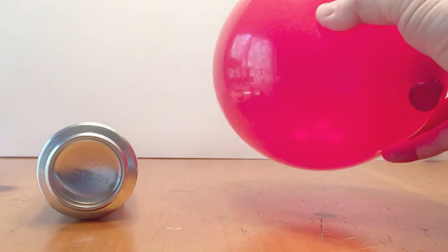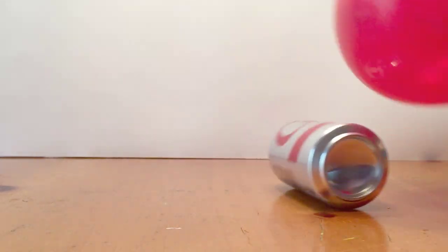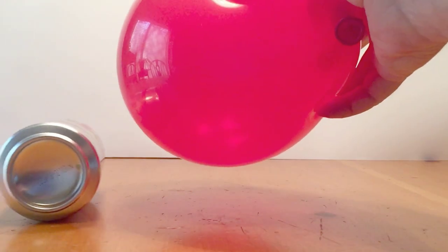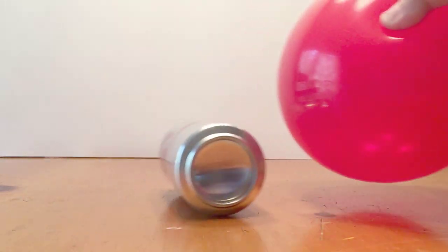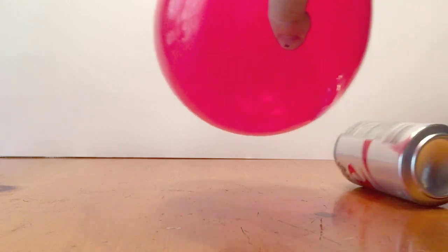Using the same charged balloon, these electrons have the power to pull very light objects with a positive charge towards them. Like the soda can, you can control the can by moving the balloon away from it back and forth.